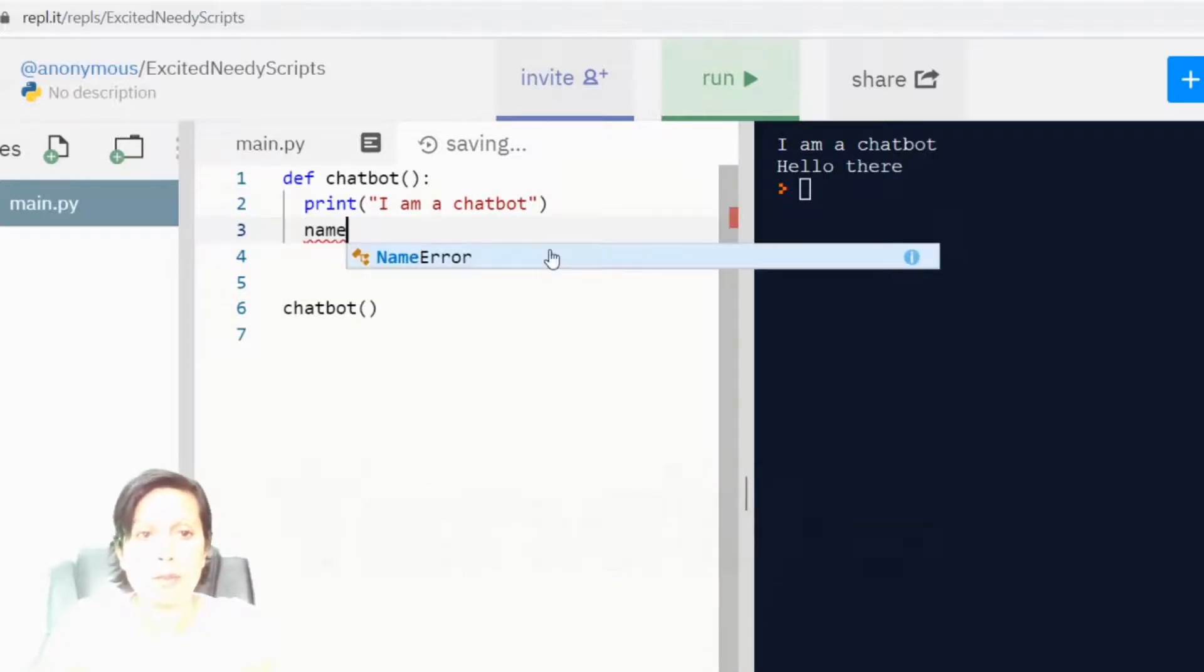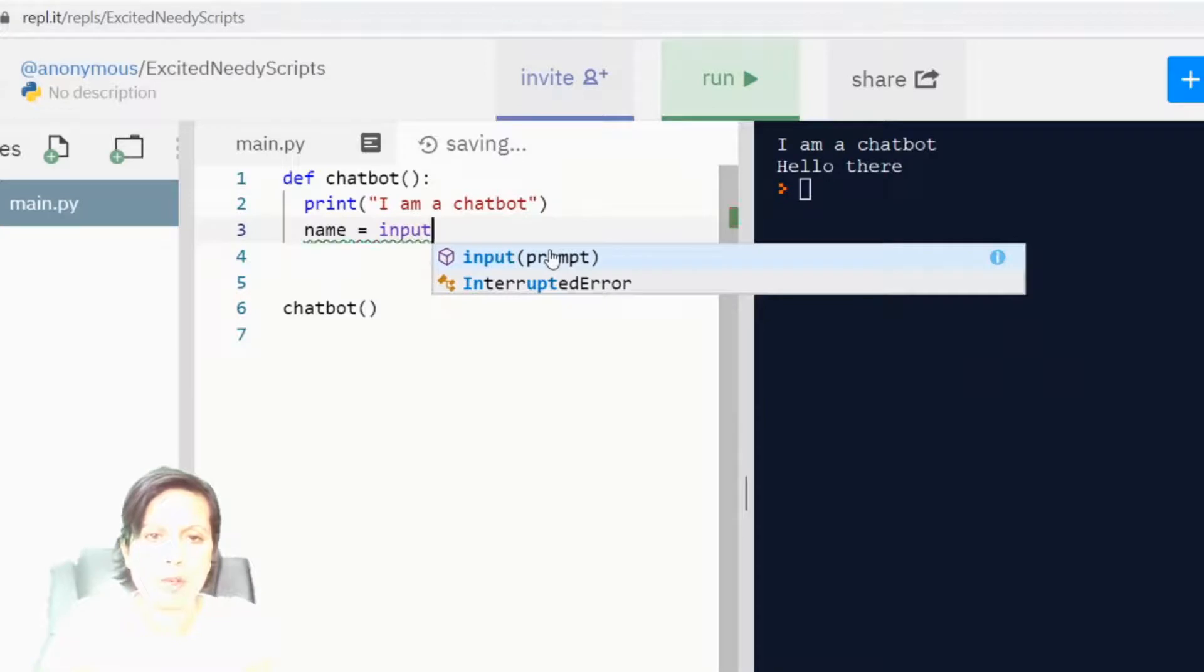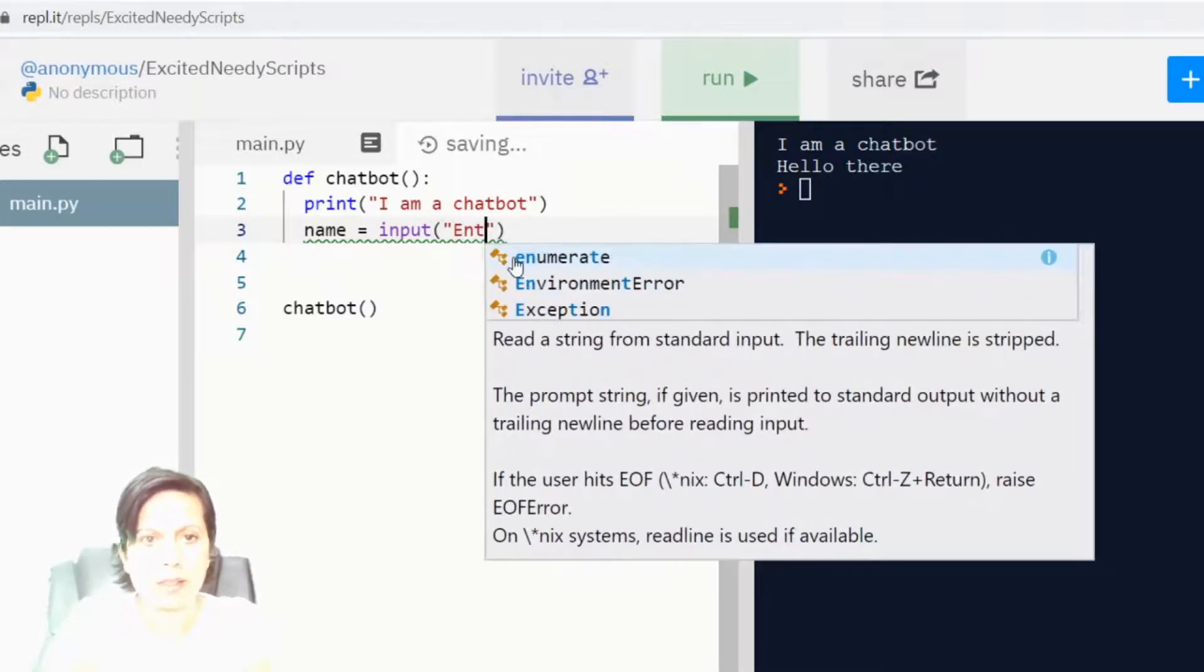So, I'm going to just call the variable name. It could be, you could call it anything. You could call it my name, or just name, or n. So, let's call it name. And we type in this command. We say input. And you can see that it comes up with a prompt. It gives us a hint as to what we could type. But I'm just going to type it. I'm going to say, what's your name?